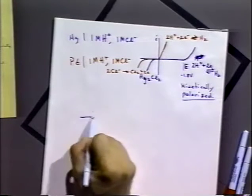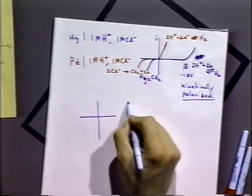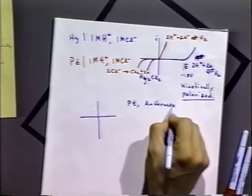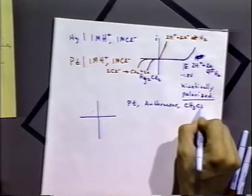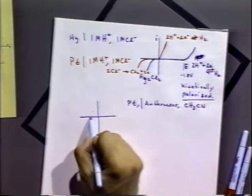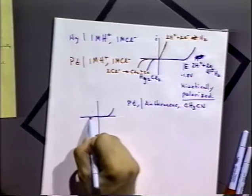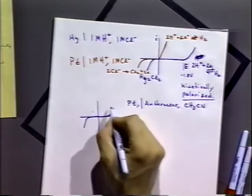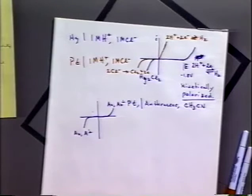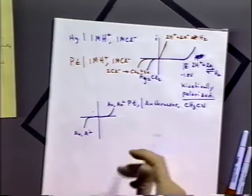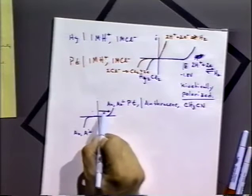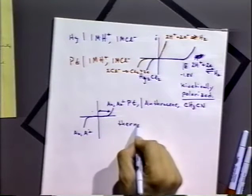On the other hand, we can think of systems that are thermodynamically polarized. For example, on a platinum electrode with anthracene in acetonitrile, we saw a reaction current-potential curve where we required negative potentials to form the radical anion and positive potentials to form the radical cation. We had to apply potentials to drive the electrochemical process. In this case, the electrode is polarized by thermodynamic considerations.